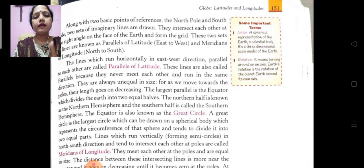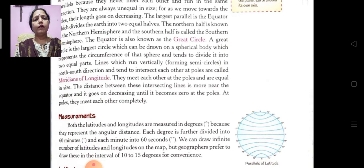The equator is also known as the great circle. A great circle is the largest circle which can be drawn on a spherical body which represents the circumference of the sphere and tends to divide it into two equal parts.